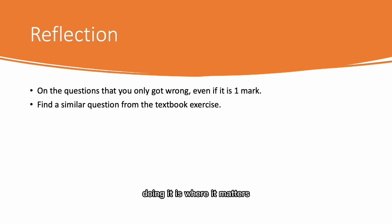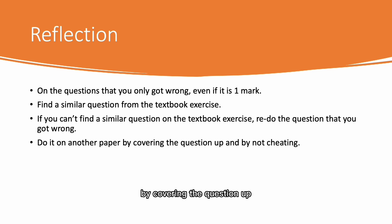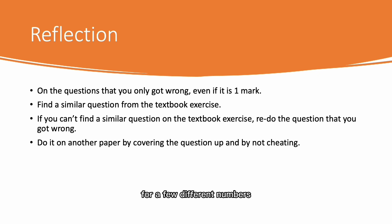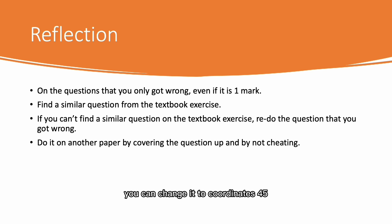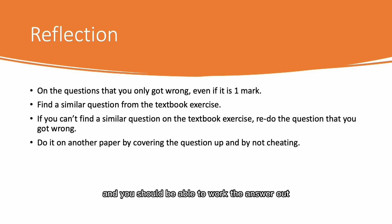Finding a similar question and doing it is where it matters. If you can't find a similar question in the textbook, you can redo the question that you got wrong — but do it on another piece of paper by covering the question up and by not cheating. A lot of students just look at the mistakes they made, literally copy and paste it, and say that they've done the question. Cover the question up, put it somewhere else, maybe do it 30 minutes later. You can even edit the question yourself and put a few different numbers — if it says coordinates one, two, you can change it to coordinates four, five. Try it with different numbers and you should be able to work the answer out.